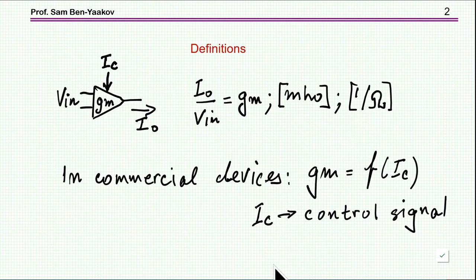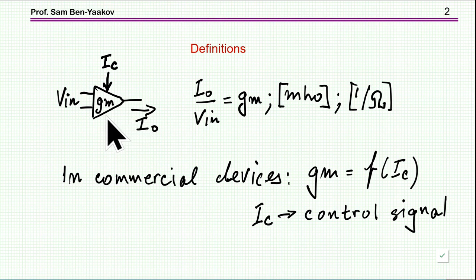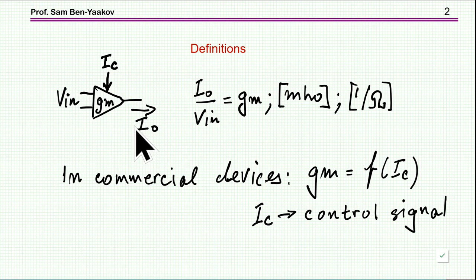Let me start with some definitions. What we mean by a transconductance amplifier is an amplifier in which the input is a voltage and the output is a current — so it's a current source. It's defined by the transconductance GM, which is the ratio between the output current and the input voltage.